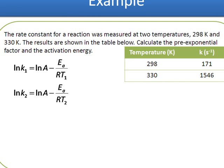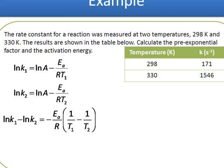You can see straight away here, if I subtract the second equation from the first, my natural log A values will cancel out, and I'll be left with natural log K1 minus natural log K2 equals minus Ea over R times the reciprocal of the temperature difference.